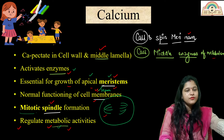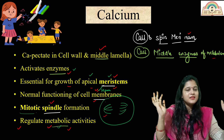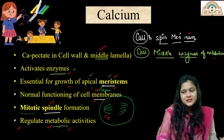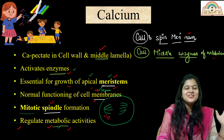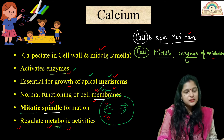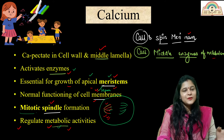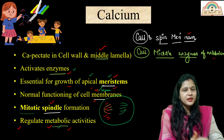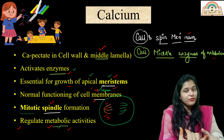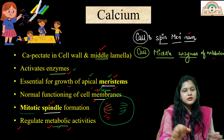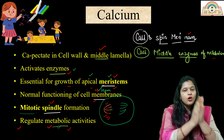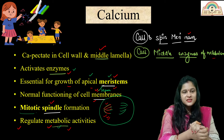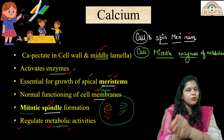Calcium is required for the normal functioning of cell membranes and for the formation of the mitotic spindle during cell division. A mnemonic for these functions: 'Call Middle Enzymes of Metabolism' — Middle is for middle lamella and cell wall, Enzymes because calcium activates different enzymes, and Metabolism because it regulates different metabolic activities.